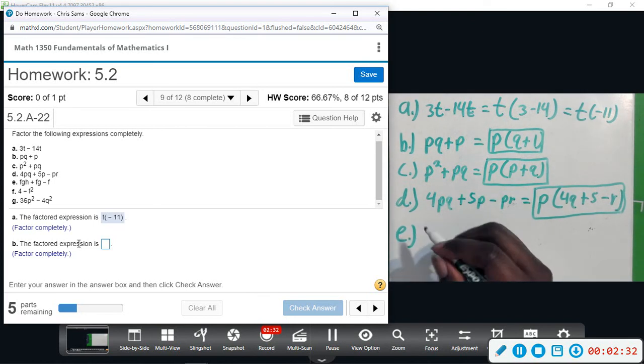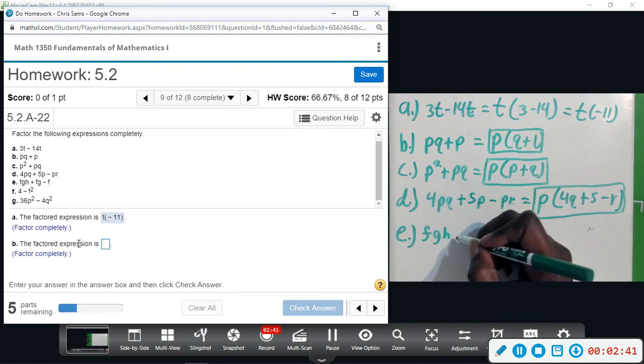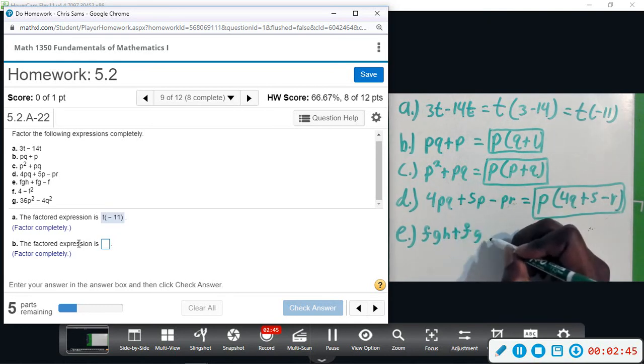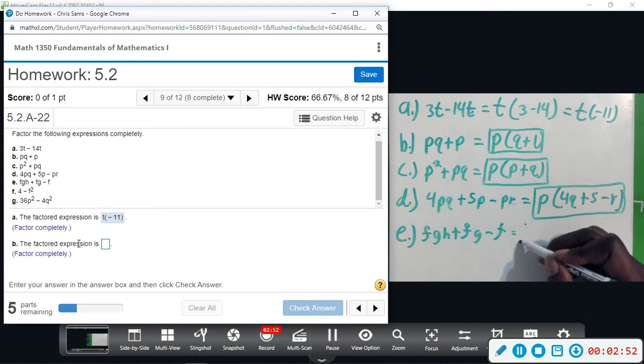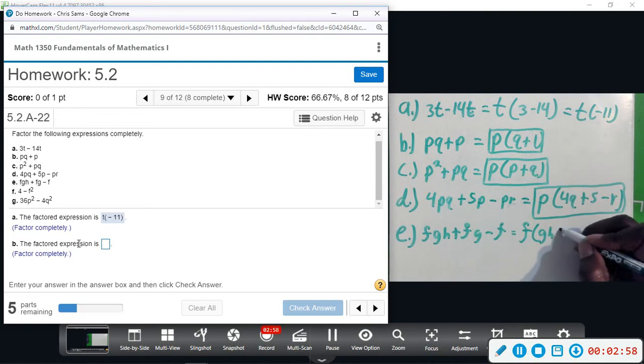Part e: we have fgh, a little hidden humor there, plus fg minus f. Divide out the f's. We have gh plus just g and then minus one.